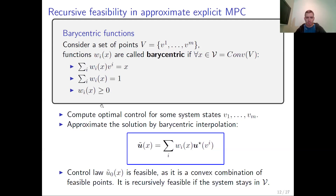If we compute the optimal control for some system states v_1, ..., v_m and approximate the solution by barycentric interpolation using the barycentric functions, the control law remains feasible as it is a convex combination of feasible points and, by assumption, our constraints were convex. It is recursively feasible if the system state is inside the convex hull of these points.